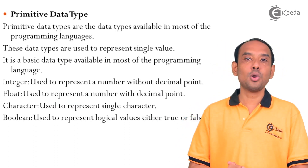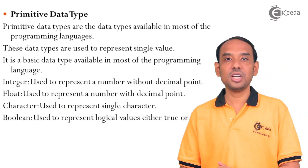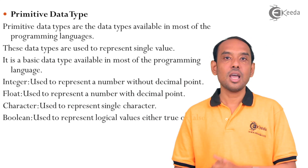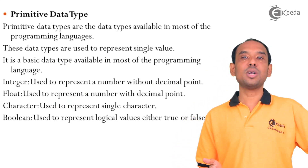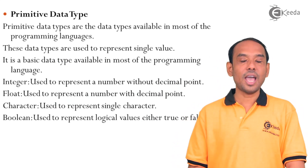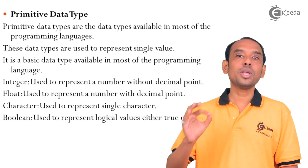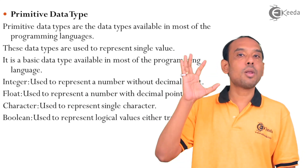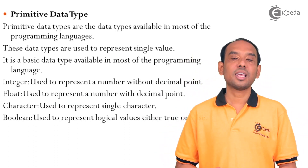Next is float. It is just the opposite of integer. Integer is a number without a decimal point, and float is a number with a decimal point.